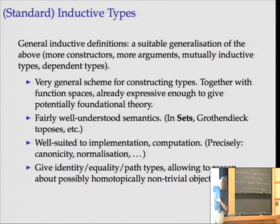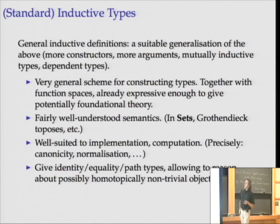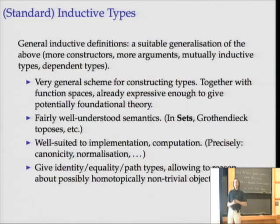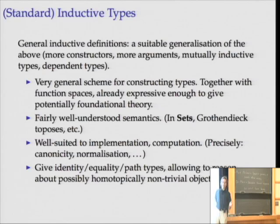Generalizing in several ways for the standard well-understood inductive types: you can have more constructors — the natural numbers have two, you might have none, one, or a dozen. You can have more arguments in those constructors, mutually inductive types, and dependent types. What it all adds up to is a very general scheme for giving definitions of types, which in a lot of type theories is taken as a basic axiom for constructing types. Together with function types, it gives you a type theory expressive enough to use as a foundation of mathematics.